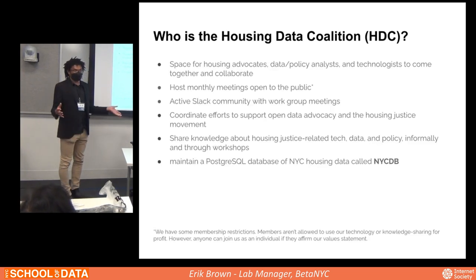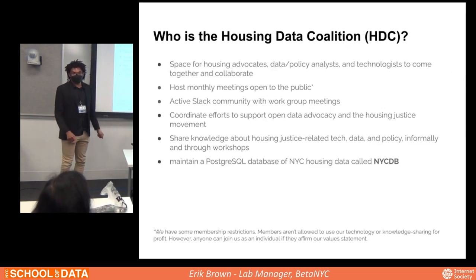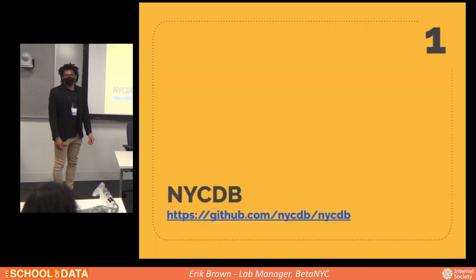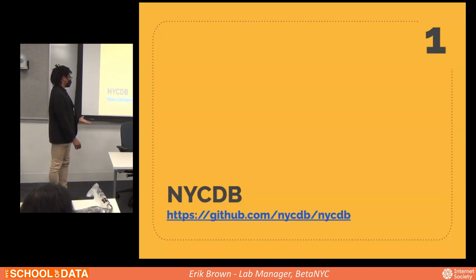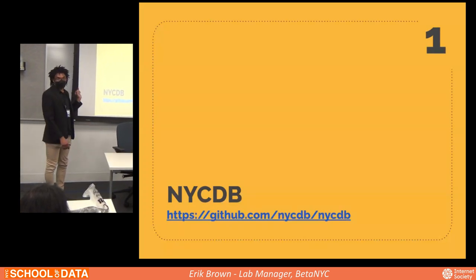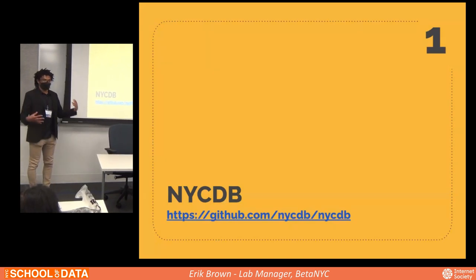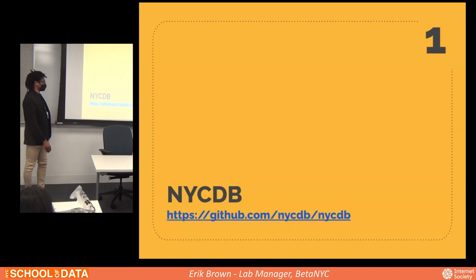One of our main things that the Housing Data Coalition does is the maintenance of a PostgreSQL database called NYCDB. If you're interested in getting a look at this data, you can access it at this link here. It is a GitHub repository that walks you through how to connect it and how to access all of this really useful information.